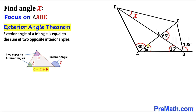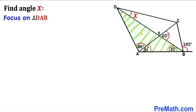Therefore angle BAE turns out to be 30 degrees. Now let's focus on the big triangle DAB. The whole angle at A is equal to 80 plus 30, giving us 110 degrees.